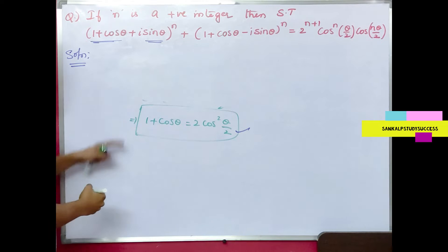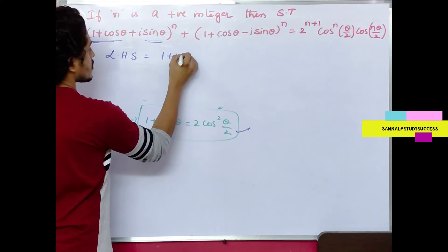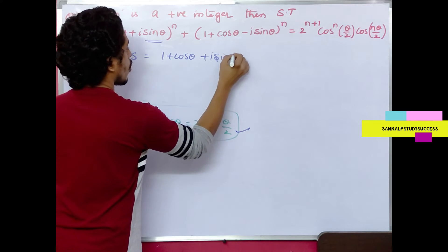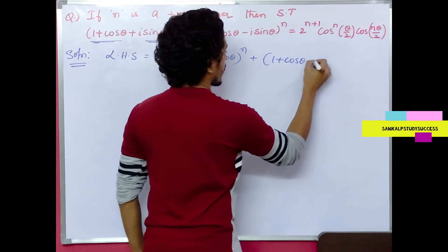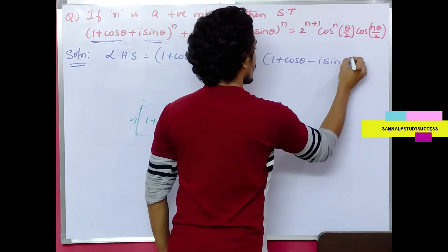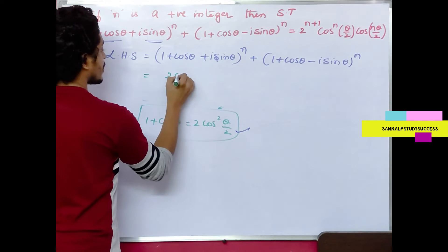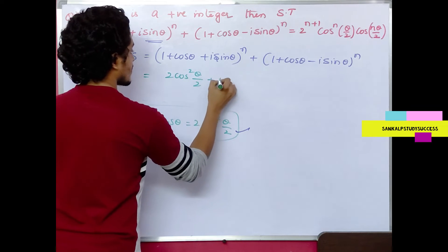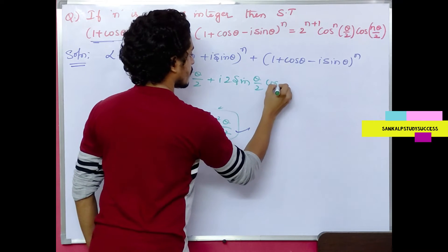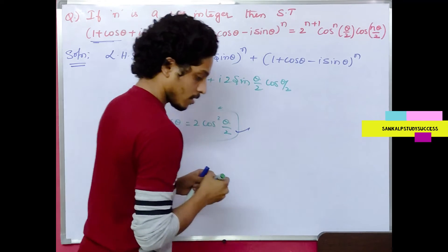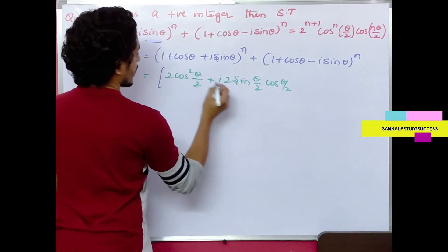LHS = (1 + cosθ + i sinθ)^n + (1 + cosθ - i sinθ)^n. Substituting: 1 + cosθ = 2cos²(θ/2) and i sinθ = i · 2sin(θ/2)cos(θ/2). The whole expression raised to power n.